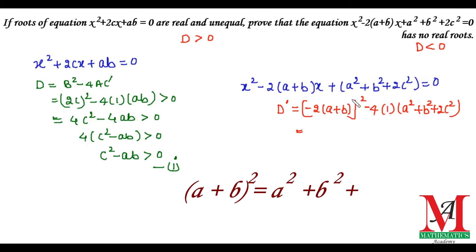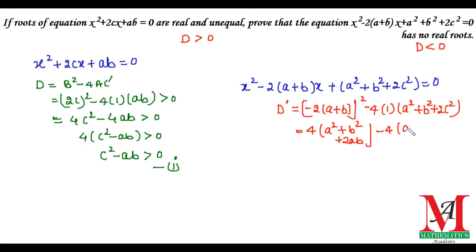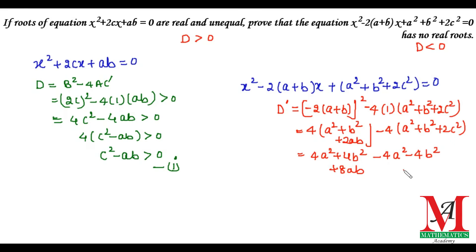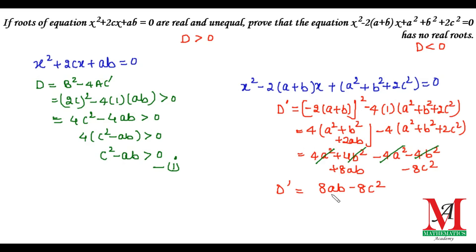Expanding: (-2)² = 4, so the first term becomes 4(a + b)² = 4(a² + b² + 2ab). Then multiplying out -4(a² + b² + 2c²) gives -4a² - 4b² - 8c². The 4a² and 4a² cancel, the 4b² and 4b² cancel, leaving 8ab - 8c². Taking 8 as common, D' = 8(ab - c²).